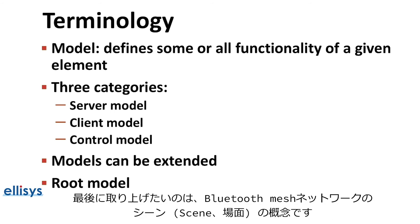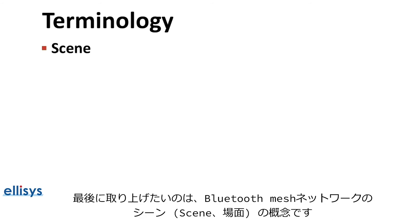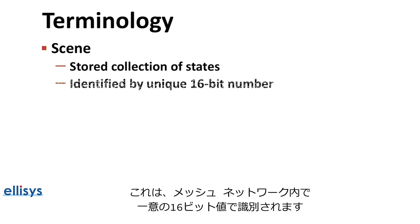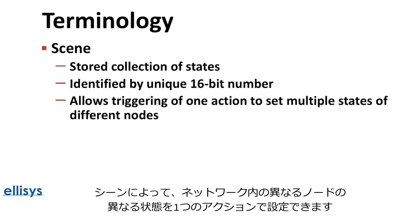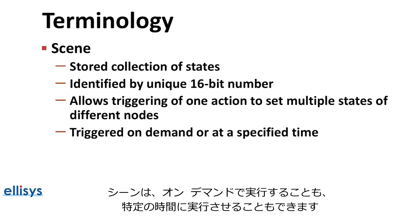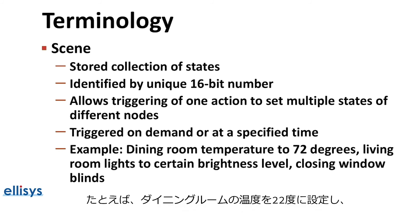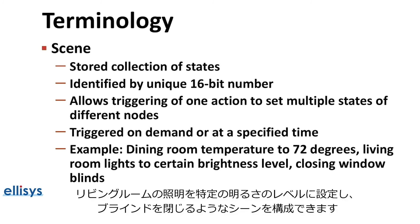The final concept we'd like to cover is the concept of scenes in a Bluetooth Mesh network. A scene is a stored collection of states, identified by a 16-bit number which is unique within a mesh network. Scenes allow triggering of one action to set multiple states of different nodes in the network, and they can be triggered on demand or timed at a specific time. For example, a scene may be configured to set the temperature of a dining room to 72 degrees, the living room lights to a certain brightness level, and the window blinds to close.